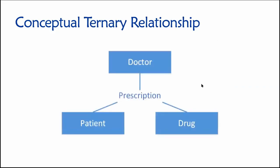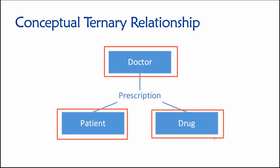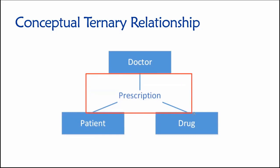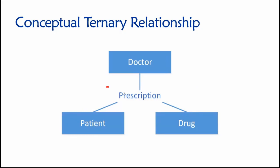Conceptually, we can also have ternary relationships or even higher-degree ones. Here's a conceptual degree three or ternary relationship showing a connection between doctors, patients, and drugs. The combination of a doctor, a patient, and a drug can be thought of as a prescription. This is conceptual — we could not implement this degree three relationship as depicted in a real-world relational database. Instead, we would need to create a fourth table, which we would probably call prescription, to serve as an intersection table allowing us to keep track of which doctors are prescribing which drugs to which patients.